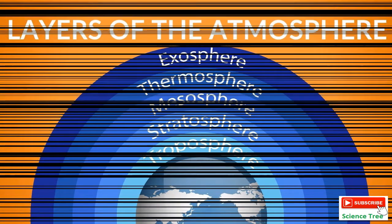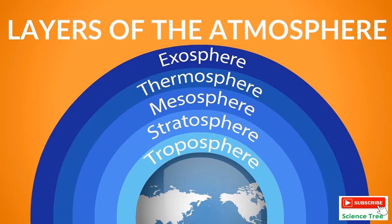Welcome to Science Tree channel. Today's topic is layers of the atmosphere. The atmosphere is present all around our Earth and consists of many layers. Exosphere is the uppermost layer, near about to vacuum space. After that, thermosphere — the name indicates 'therm' comes from heat. It is the layer having much heat, where the Sun is very active, giving X-rays and UV radiations.